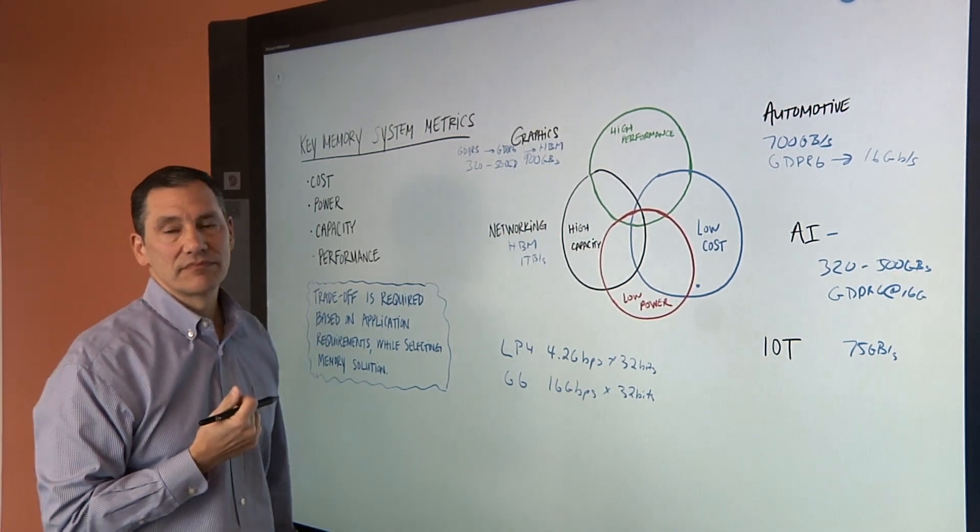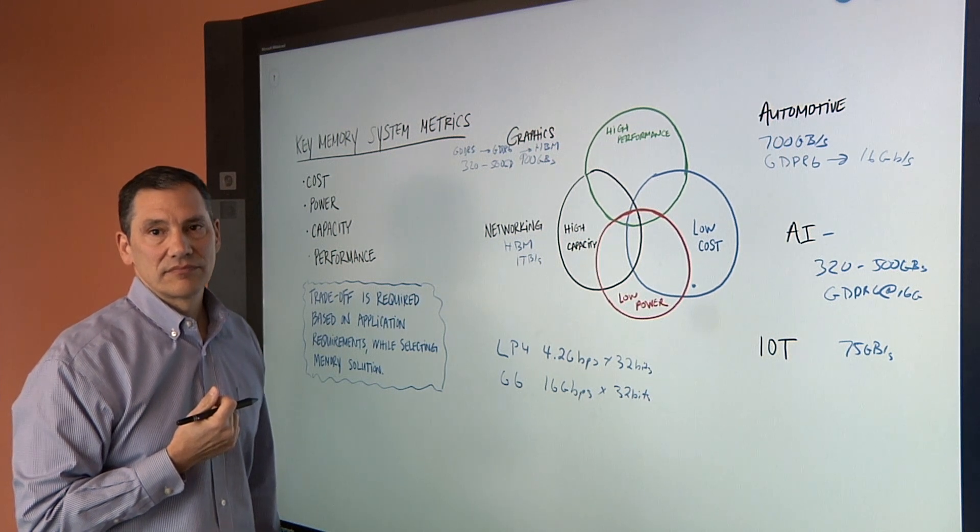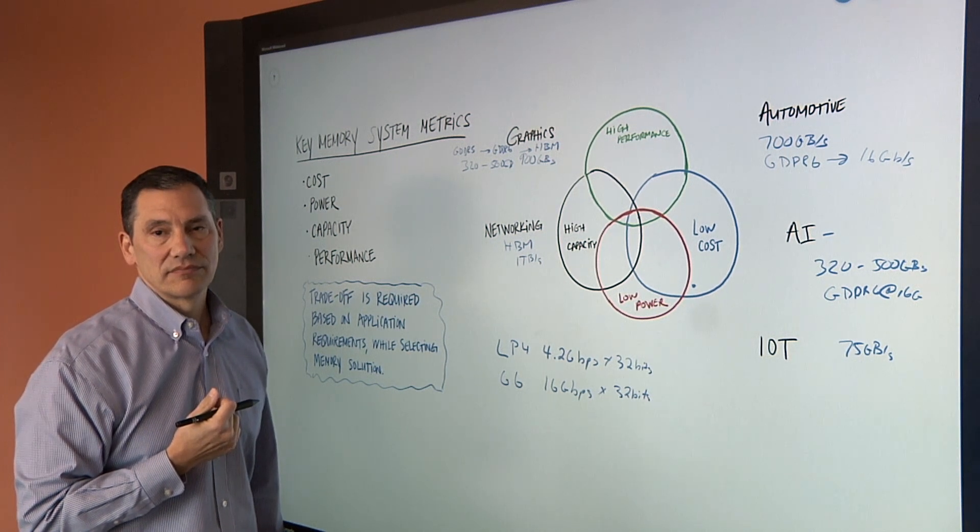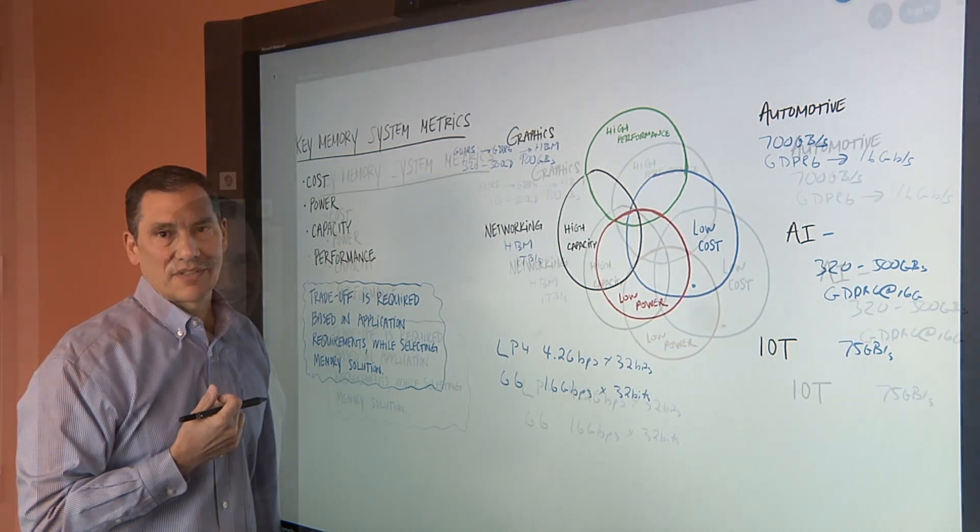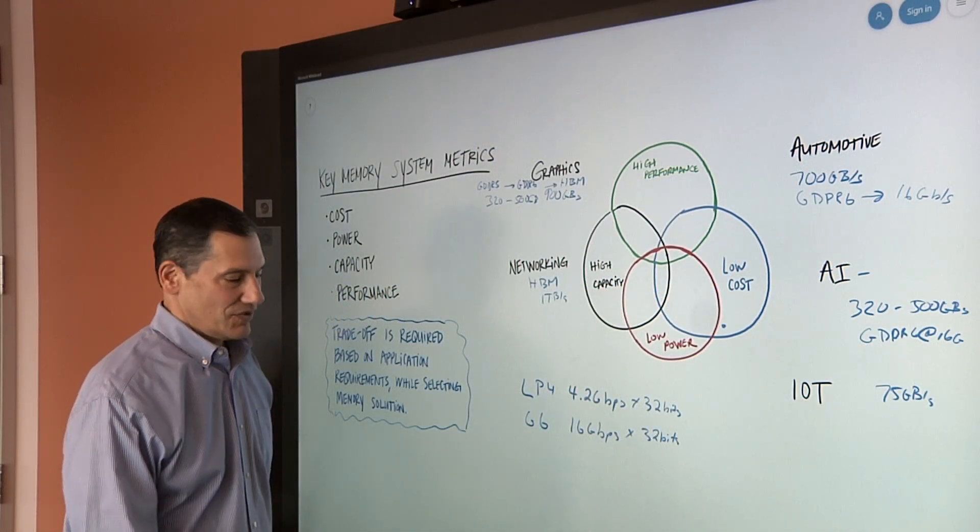And when we talk about the edge, just to be clear, this is pretty much anything between the endpoint, which has no memory on it and no processing, all the way up to the cloud, right? That's correct. So Frank, what does a real GDDR6 system actually look like? Let's take a look.